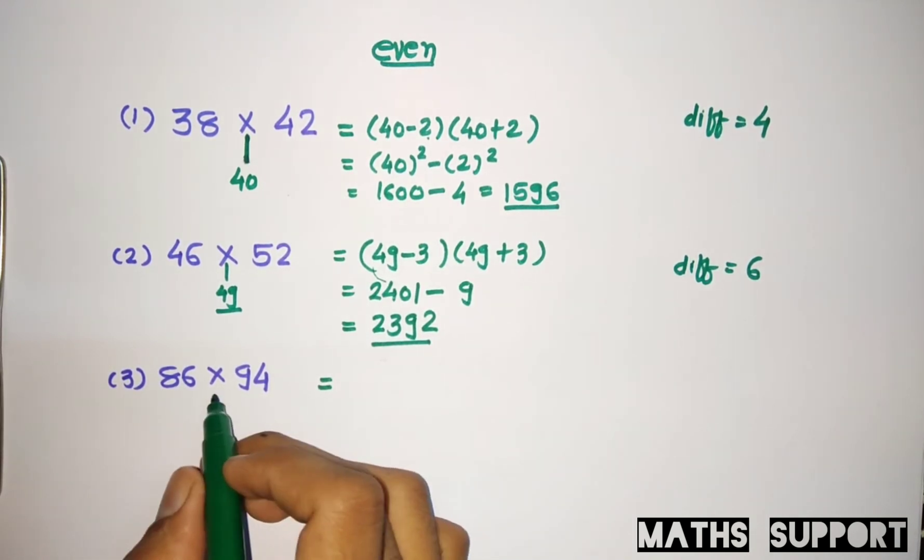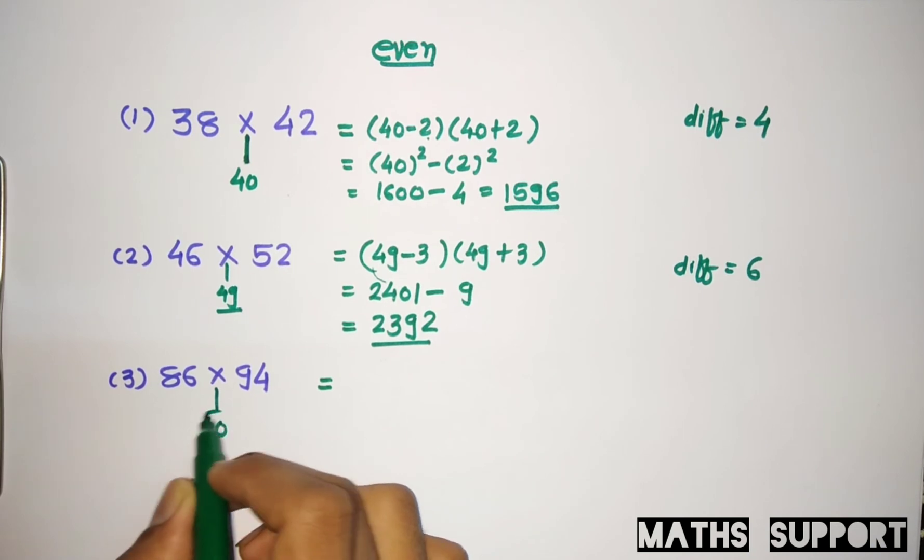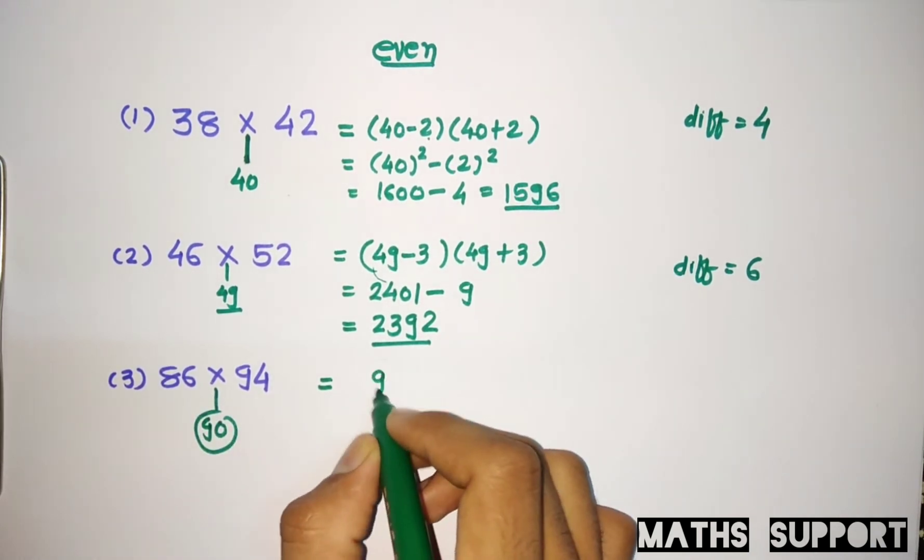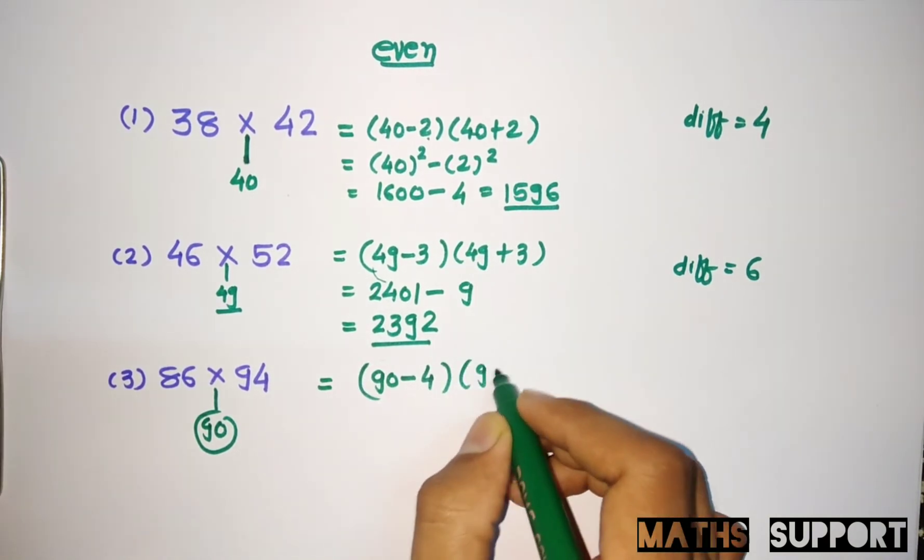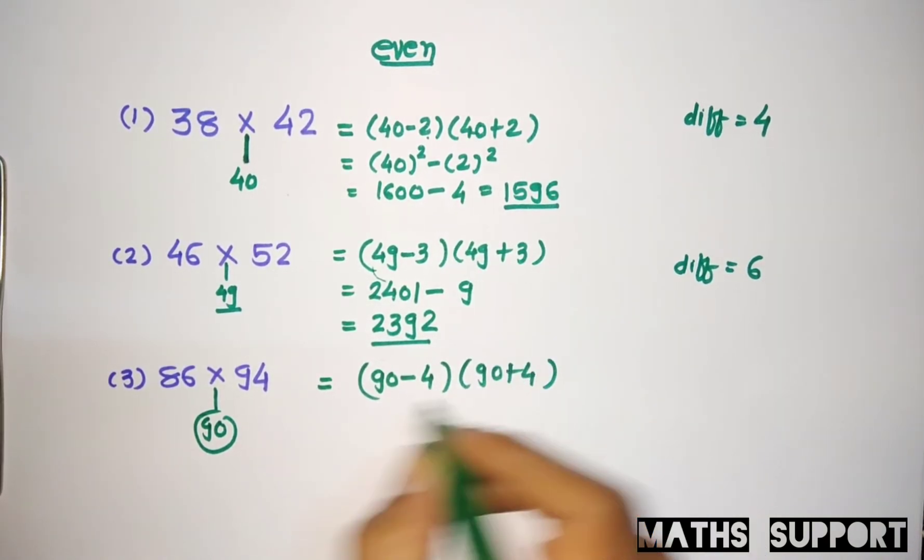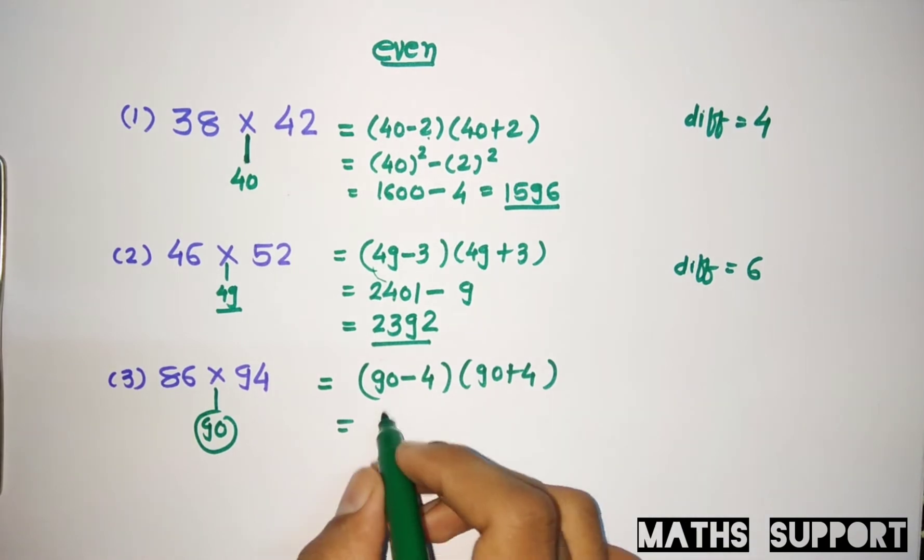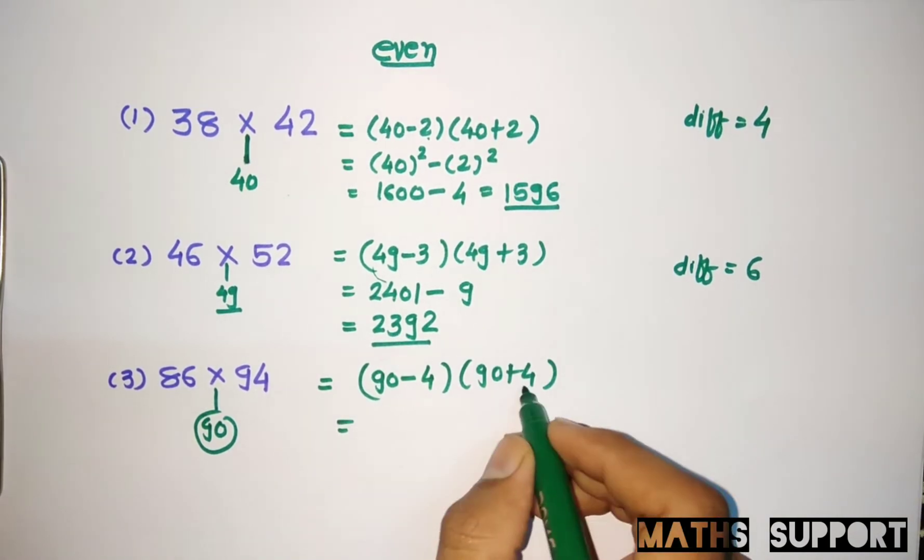Here the difference is 8, so from this you can find the mid value that is 90. So these numbers can be written as 90 minus 4 and 90 plus 4. So again it's a minus b, a plus b, so it's 90 square minus 4 square.